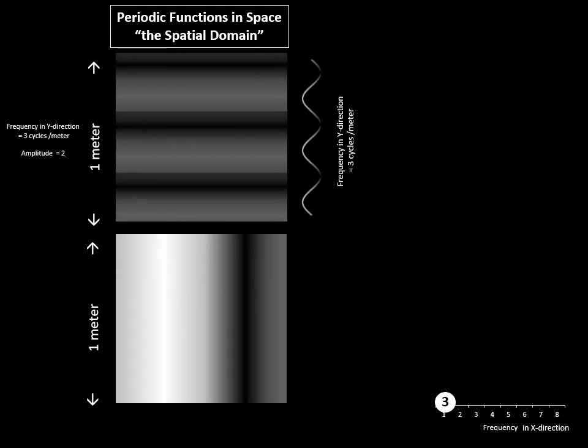On the bottom, we have the example we have previously seen where we have spatial information that varies over one cycle per meter in the x direction, and we've represented it as a single white dot of amplitude three on the x frequency direction equal to one cycle per meter.